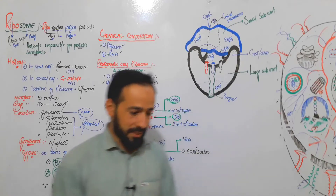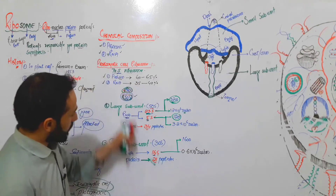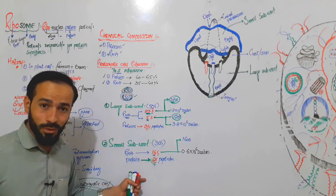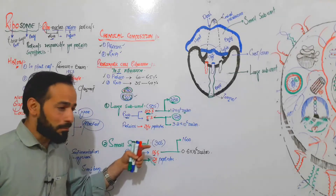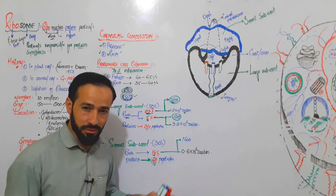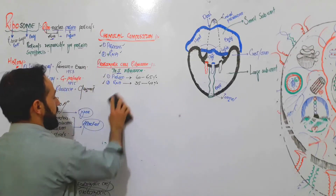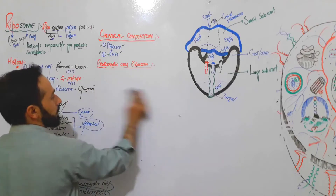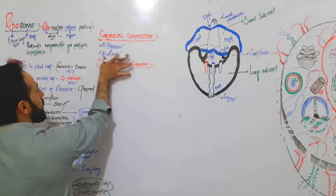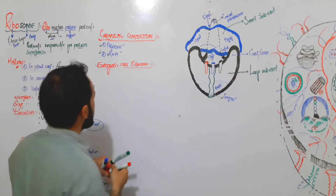Hello dear friends, welcome back. Let's discuss the chemical composition of the 80S ribosome. This follows our previous lecture on the 70S ribosome — I hope you've watched it. It was a little difficult, but if you watch it two or three times it will stick in your mind. Now we are talking about the eukaryotic cell ribosome.